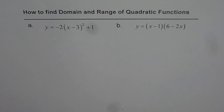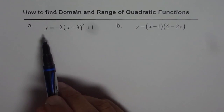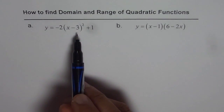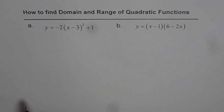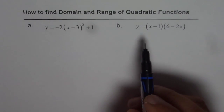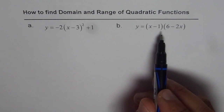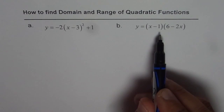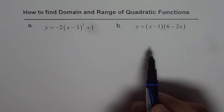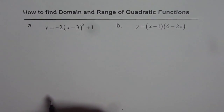Let us understand how to find the domain and range of quadratic functions. We have two examples here. The first one is y equals minus 2 times x minus 3 whole square plus 1, which is a parabola in vertex form. And then we have y equals x minus 1 times 6 minus 2x, which is in factored form. We will analyze both and find domain and range for these functions.